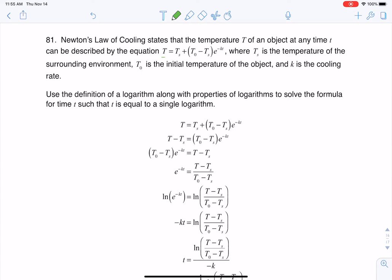We had your current temperature, your surrounding temperature, your initial temperature, you had the cooling rate, and you had the time that this object was cooling. So there were so many variables, there were five of them.